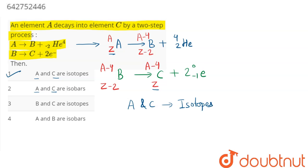So option number 1, A and C are isotopes is correct. They are not isobar, as in isobar we can say mass number must be same and here we can say B and C. So here B and C are isobars.